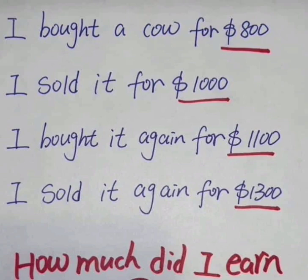So the answer is $400. You might have a different way of working it out, but these five ways show how I get there. Please share whatever you think so we can learn from each other — iron sharpens iron. Always remember: profit is the selling price minus the cost price. Don't be confused by the wording and the numerous transactions; there's always a simple way to look at things.